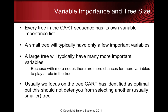As we get to bigger trees — for example, the optimal tree — the variable importance list contains many more variables. The first point to keep in mind is that variable importance, as reported, is for a tree of a specific size. If you change the size of the tree, you may very well change the number of variables that appear and even their ranking. Usually we focus on the tree CART has identified as optimal, but this should not deter you from selecting another tree, often a smaller one of particular interest.